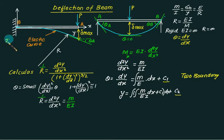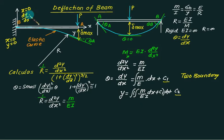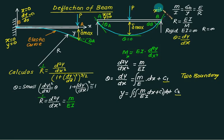To develop boundary conditions: for a cantilever beam, at x = 0, y = 0 (first BC), and at x = 0, dy/dx = 0 because the beam is horizontal at the fixed end (second BC). For a simply supported beam, at x = 0, y = 0, and at x = L, y = 0. Alternatively, at x = L/2, dy/dx = 0 by symmetry. Apply these conditions to solve for C1 and C2 and obtain the deflection equation.